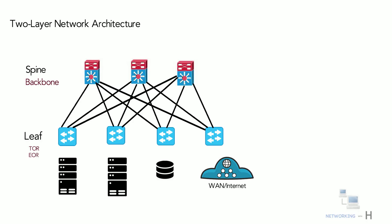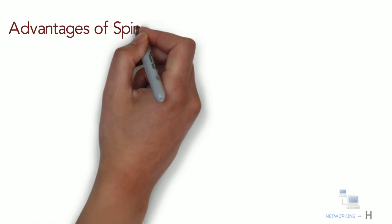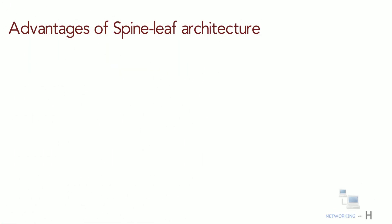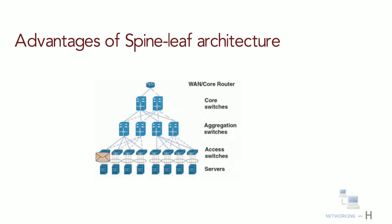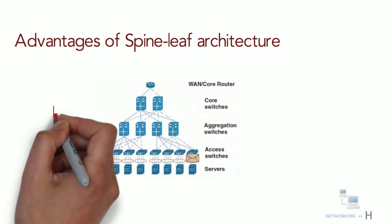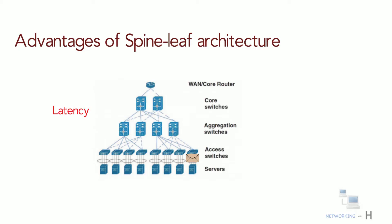Leaf-spine network is more useful for data centers that experience more east-to-west network traffic than north-to-south traffic. Let's look at some of the advantages and characteristics of the leaf-spine architecture. In a three-tier network, one server may need to traverse a hierarchical path through two aggregation switches and one core switch to communicate with another server, which adds latency and creates traffic bottlenecks.